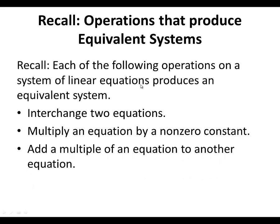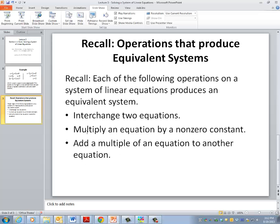But before we get there, let's recall what we did mention in lecture two as operations that produce equivalent systems. Number one would be to interchange two rows or two equations. Number two, to multiply an equation by a non-zero constant. And three, to add a multiple of an equation to another equation. So any of these three operations performed on the system would not change the system.